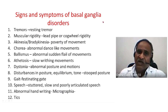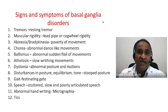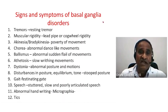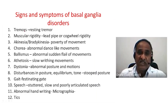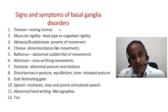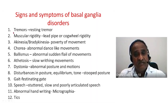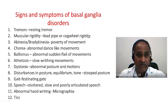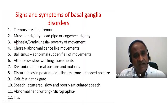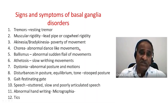I have listed nearly 12 signs and symptoms of basal ganglia disorders. The first is resting tremor — a continuous rhythmic motion. The second is muscle rigidity — lead pipe or cogwheel type. Third is akinesia or bradykinesia — poverty of movement. Fourth is chorea — abnormal dance-like movements.